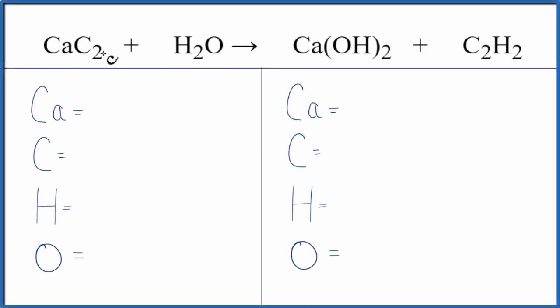To balance this equation, CaC2 plus H2O, let's count the atoms up on each side of the equation. We have one calcium, two carbons, two hydrogens, and just one oxygen.